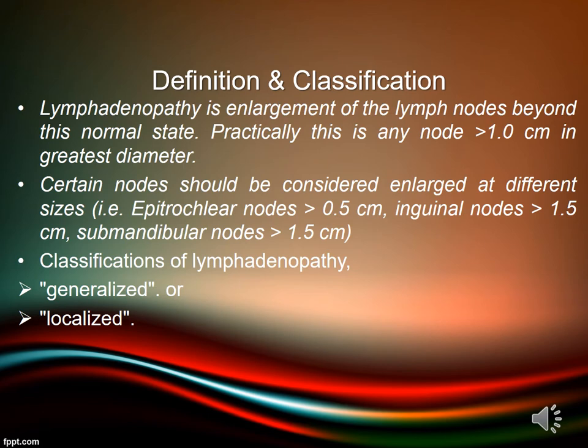There are various classifications of lymphadenopathy, but a simple and clinically useful system is to classify it as generalized lymphadenopathy if lymph nodes are enlarged in two or more non-contiguous areas — this almost always indicates the presence of significant systemic disease — and localized lymphadenopathy if only one area is involved.